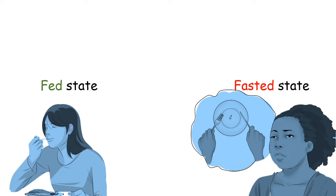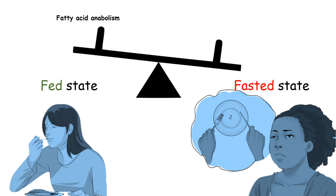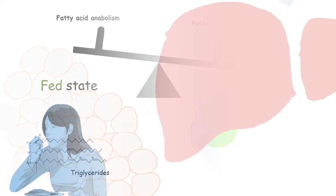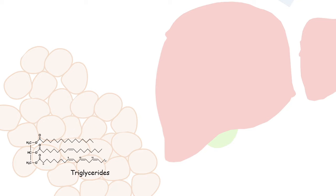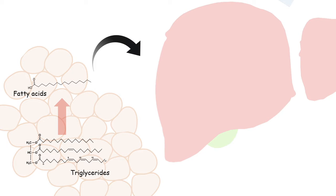To understand that, we have to understand the fasted and fed state. Our body goes through fed and fasted states and accordingly our metabolism changes, because in the fed state fatty acid anabolism is preferred, whereas in the fasted state fatty acid catabolism needs to be triggered to generate energy. In the fasted state, the reserve of fatty acids is adipose tissue, where triglycerides are broken down to release free fatty acids, which are transported into the hepatocytes of the liver. There, the mitochondria carry out beta oxidation of fatty acids, generating acetyl-CoA that can be channeled into ketone body biogenesis or used to generate energy.